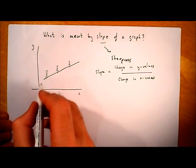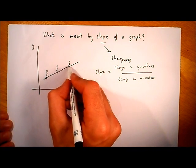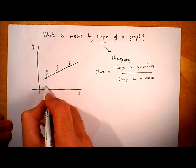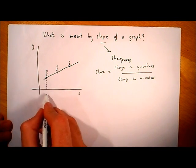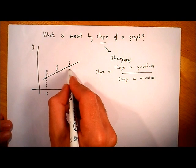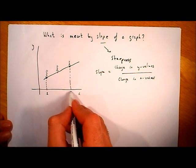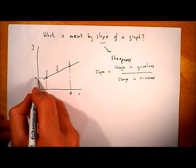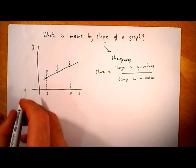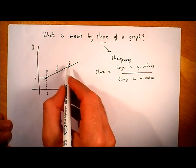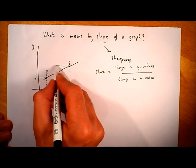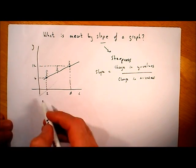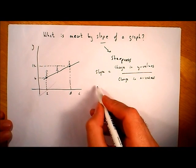It's very simple. Say we want to work out the slope between this point here and this point up here. Let's say the x value corresponding to that point is 2 and the x value corresponding to this point is 8. And let's say the y value corresponding to this point is 6, and the y value corresponding to this point is 12. So the slope of this graph is just going to be the change in the y values divided by the change in the x values.